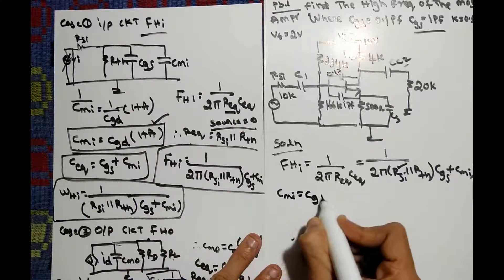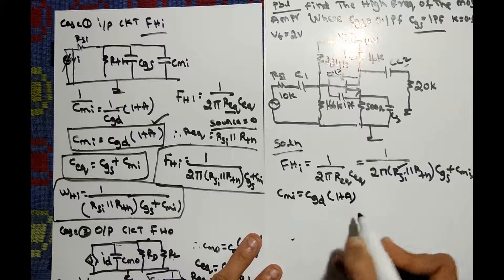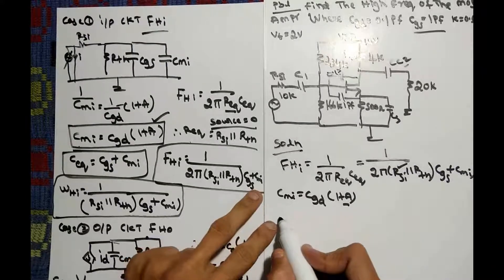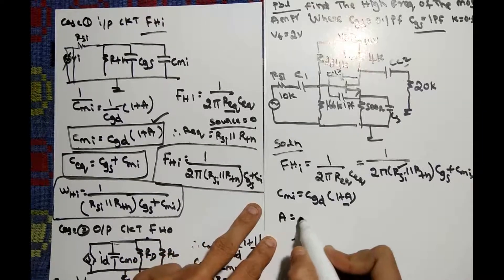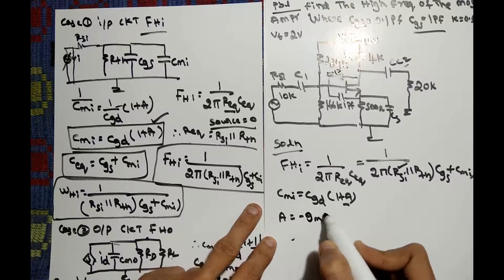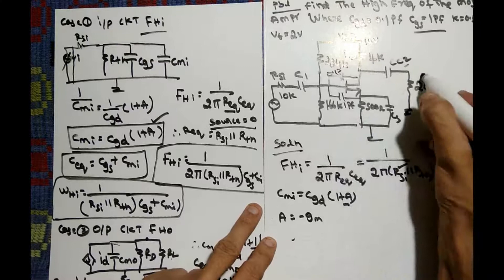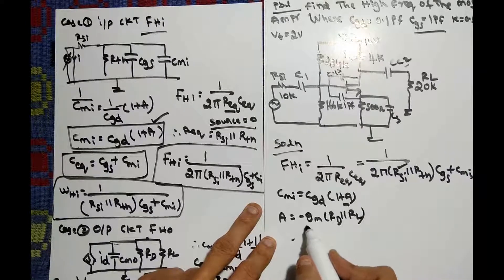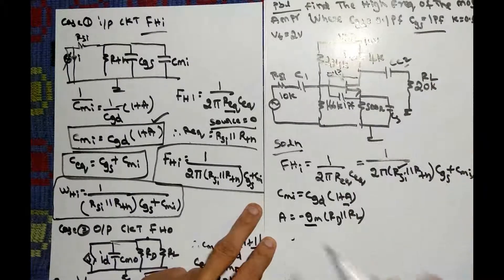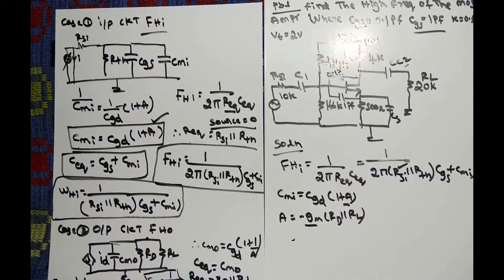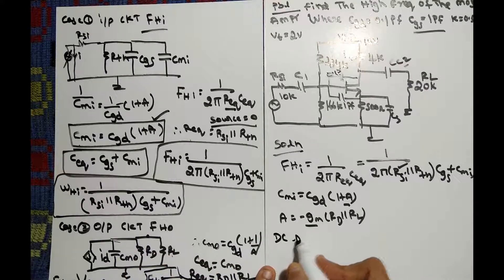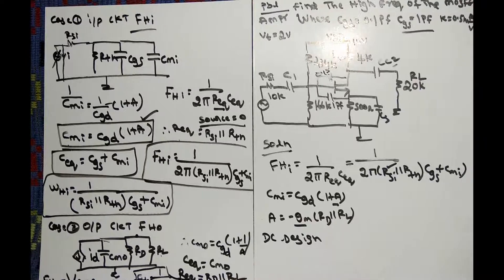The issue is finding CMI. CMI equals CGD times (1 + A), so we need the gain of the circuit. The gain formula is A equals minus GM times (RD parallel to RL), since we have two resistances RD and RL. RD and RL are given, but GM is not, so we need to find GM from the DC design.